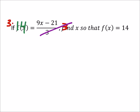3 times 14 is 42, if I've done that math right in my head, which is sometimes extremely dangerous. And I've got this equals 9x minus 21.